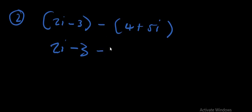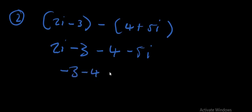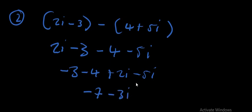Distributing gives us 2i − 3 − 4 − 5i. Collecting like terms, we are going to have −3 − 4 + 2i − 5i, which gives us −7 − 3i. So this is our solution for that question. The next one will be based on multiplication.